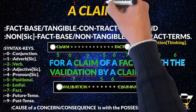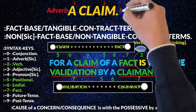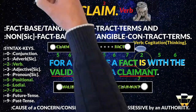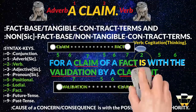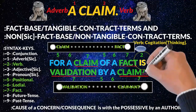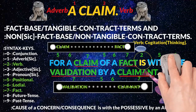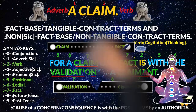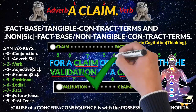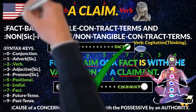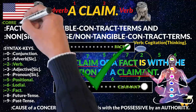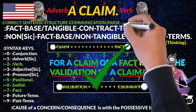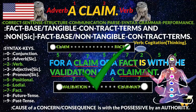Whereas up here, it's just adverb-verb. Nothing's been positioned — it's just thinking, all thinking and modification in your mind. Whereas down here, everything is correct and has been positioned with the correctness to make a claim of the facts with the correct sentence structure, communication, parsi, syntax, grammar, knowledge, performance.